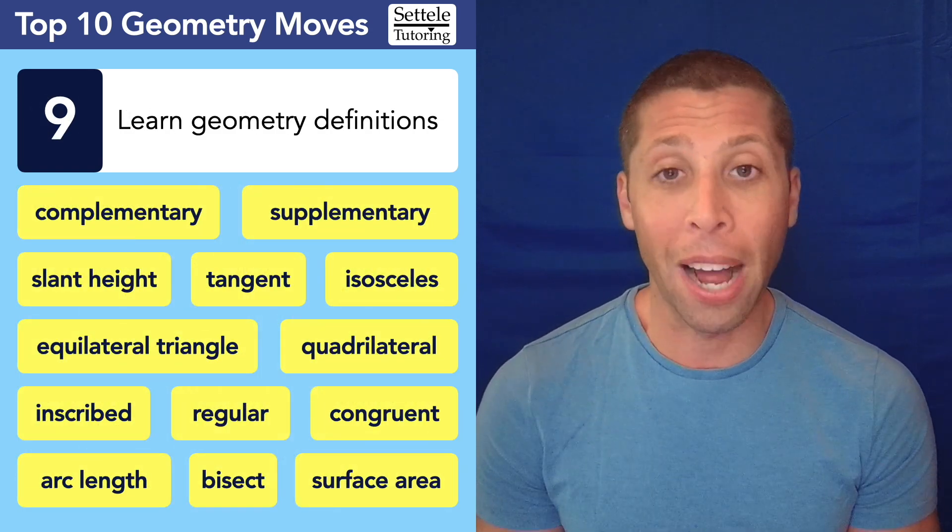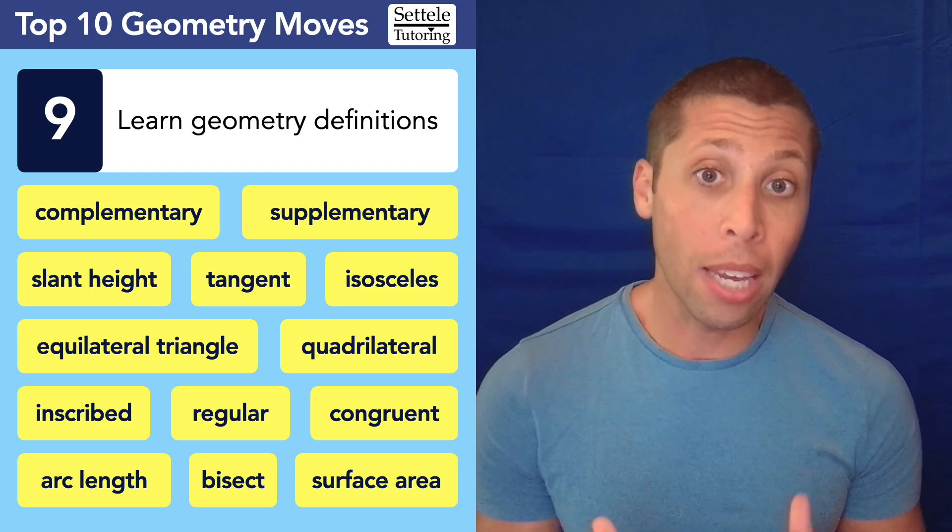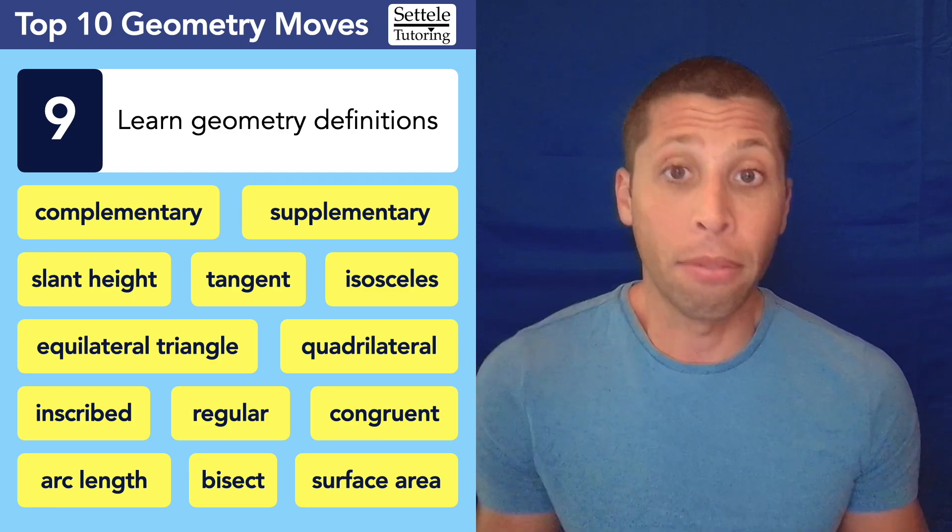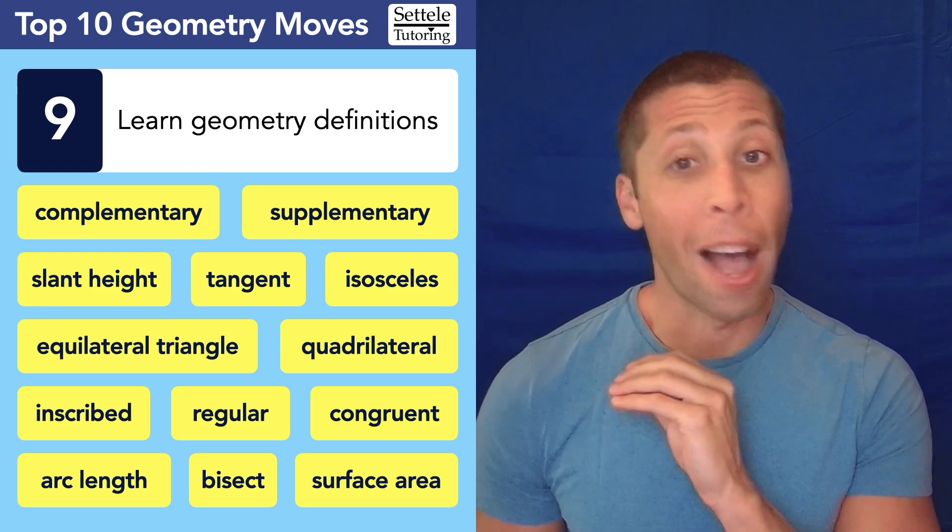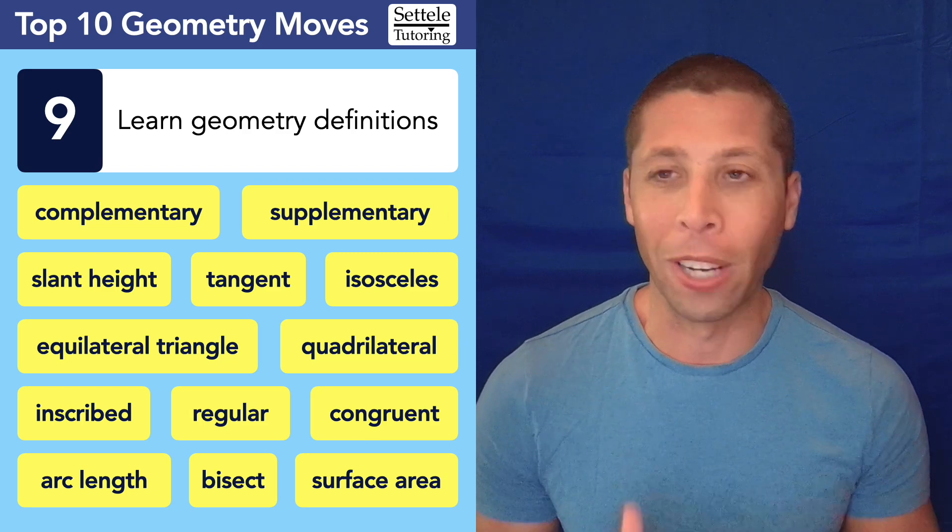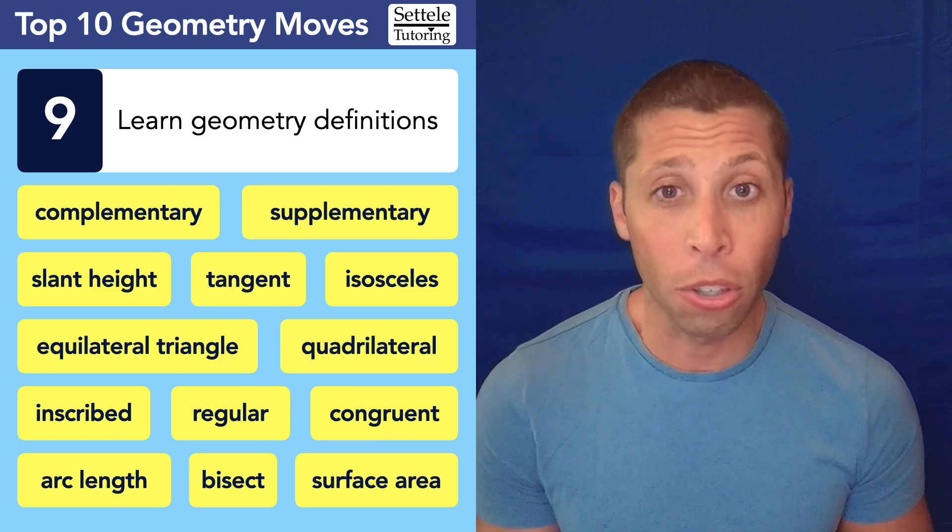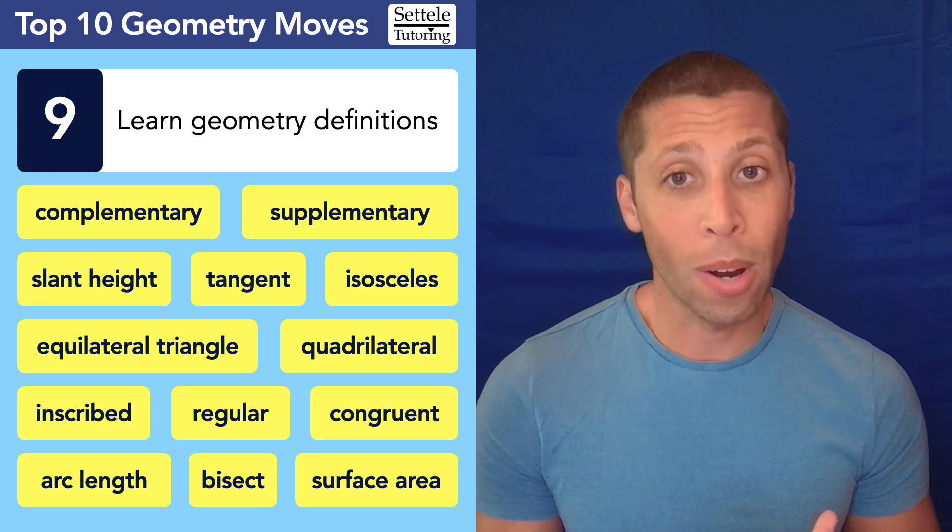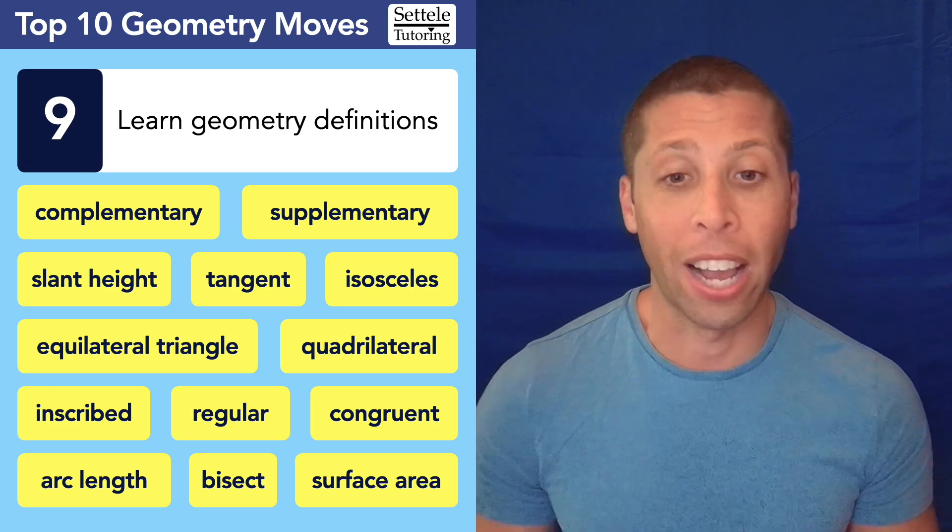Now, number nine, we need to learn geometry definitions. Here are a few of them that I just kind of came up with for this lesson. Basically, especially if you are not a native English speaker, a lot of geometry terms are things that you learn in your native language, but then have an English version that you need to know for the SAT. So these are all things that I'll let you look up on your own. But as you practice using real SAT questions, anytime you encounter a geometry word that's unfamiliar to you, it's your responsibility to look that up because it's always going to mean the same thing.